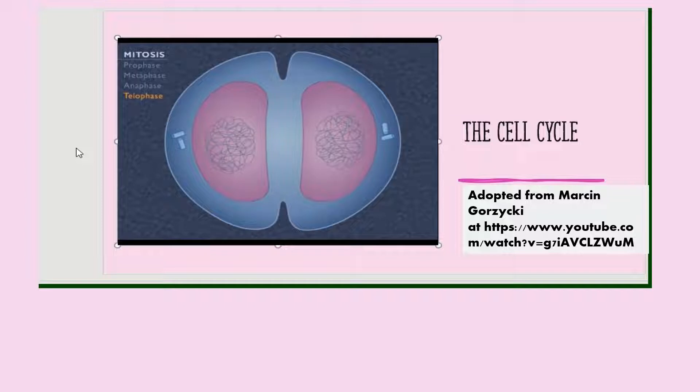In telophase, the two groups of chromosomes reach the opposite ends of the cell. As a new nuclear envelope starts to form around each group, the chromosomes uncoil and the spindle disappears.